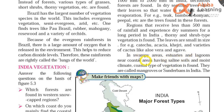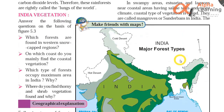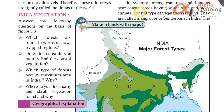Also khejri and varieties of cactus like aloe vera and agave are found. In swampy areas, estuaries and lagoons near coastal areas having saline soils and moist climate, coastal type of vegetation is found. Estuaries are where small rivers meet the sea. Lagoons are stable water bodies near the coast where seawater has entered a deep area — there are no waves there. So saline soil and moist climate support coastal vegetation.